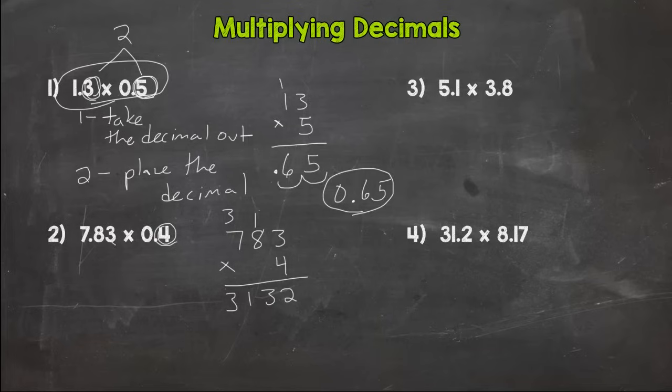Now go back to your original problem. See how many digits are behind the decimal: 1, 2, 3. So that means our answer will have three digits behind the decimal. So I bring it in three: 1, 2, 3. So our answer is 3.132 thousandths. Done with that one.